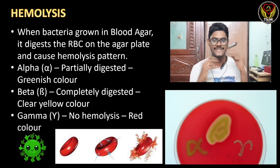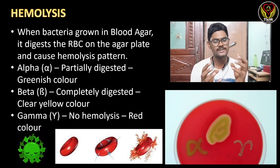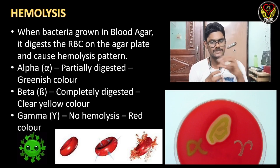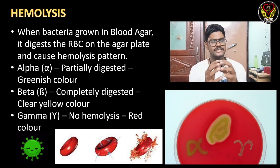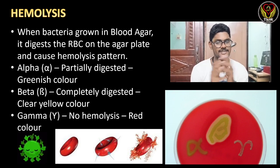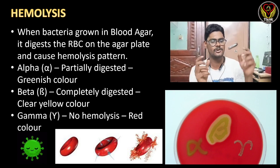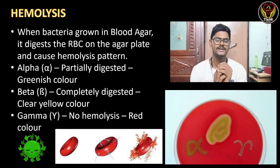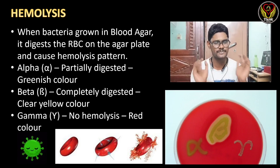The last parameter is hemolysis. For this we inoculate the bacteria on blood agar, where the bacteria digest RBCs and form patterns. The patterns are alpha (partial digestion of RBCs, producing a greenish color), beta (complete digestion of RBCs, producing a clear yellow zone), and gamma (no hemolysis, appears red).